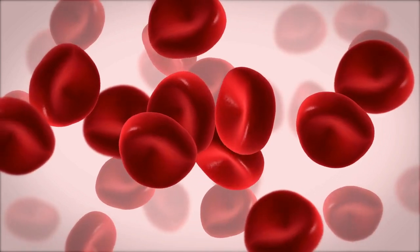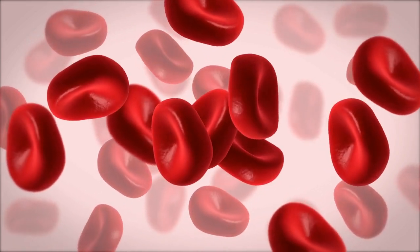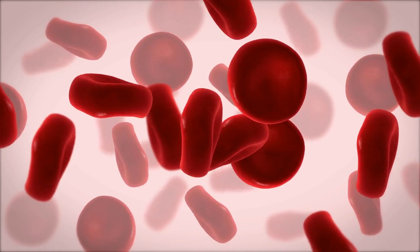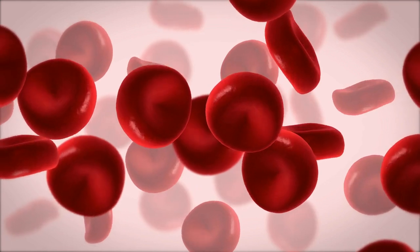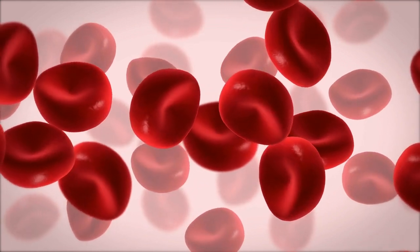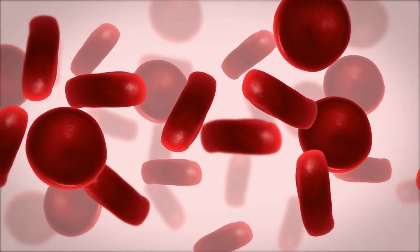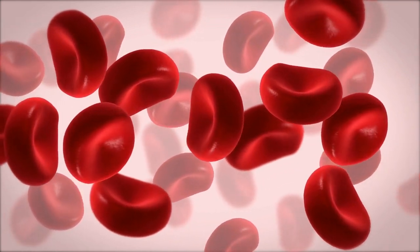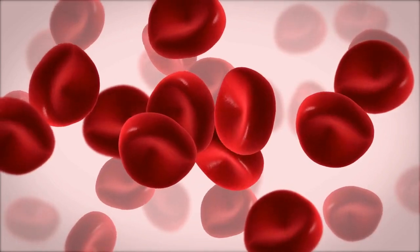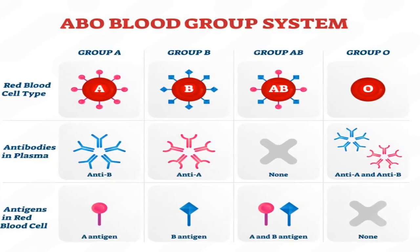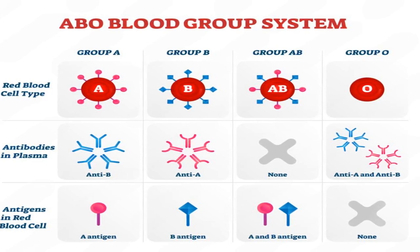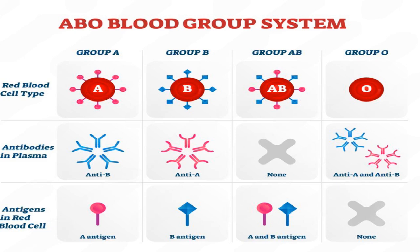Number 2. What is the ABO blood group system? The ABO blood group system is a method of classifying human blood based on the presence or absence of two specific antigens, A and B, on the surface of red blood cells. It divides blood into four main types. Type A has A antigens on red blood cells and anti-B antibodies in the plasma. Type B has B antigens and anti-A antibodies in the plasma.